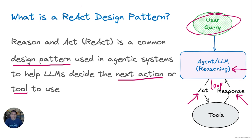Now let's understand what a React design pattern is. React, or Reason and Act, is a prominent framework used in agentic systems. It enables large language models to determine the appropriate action or tool to call in response to user inputs. In this illustration on the right-hand side, the user asks a query to the agent. The large language model reasons on that query and acts to call a tool, and the response is fed back to the LLM for further processing, and this loop continues. The React pattern is sometimes referred to as a React loop, as the LLM can continuously reason and act until it arrives at a final answer for the user query.